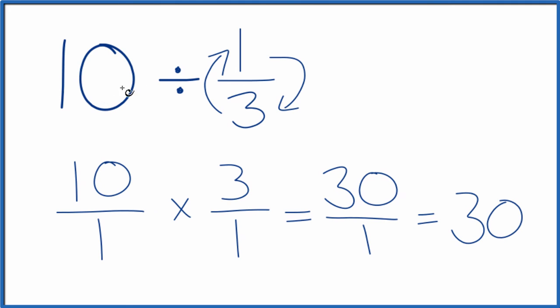So in answer to our question, 10 divided by one-third, we get 30. If you multiply 30 times one-third, you'll end up with 10.